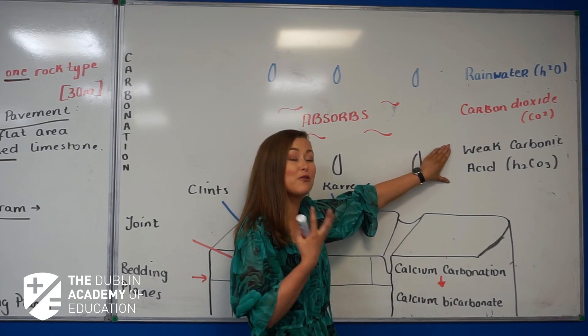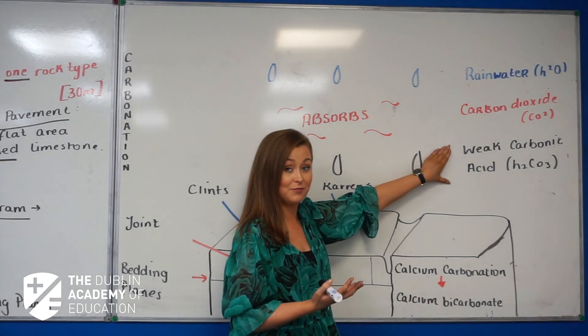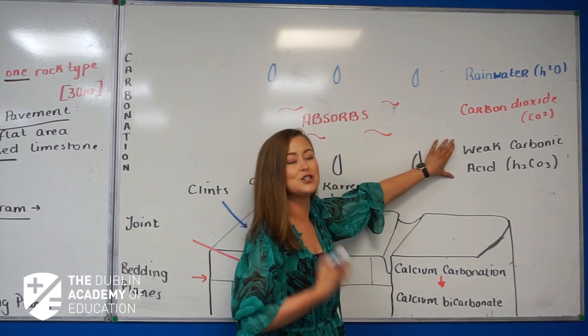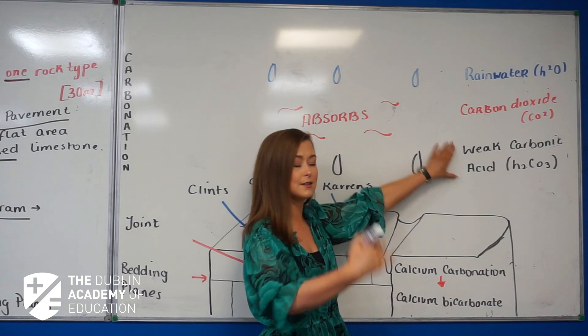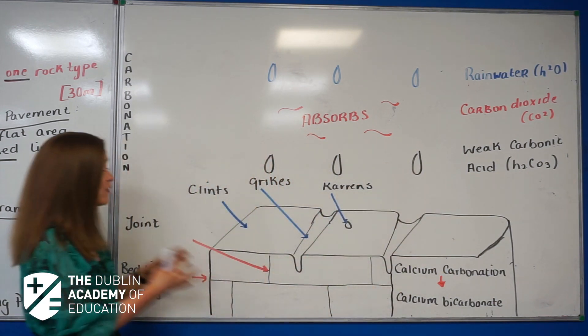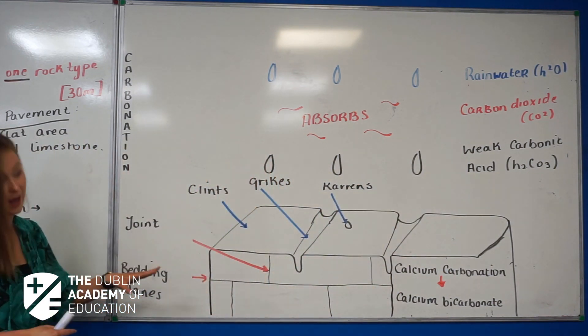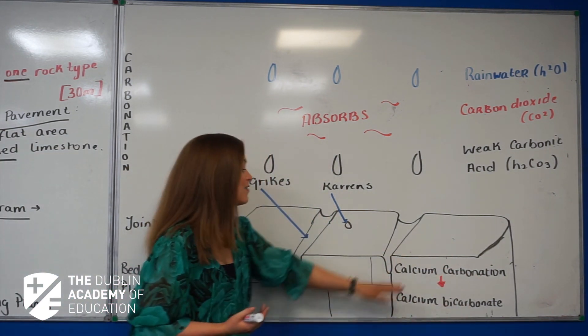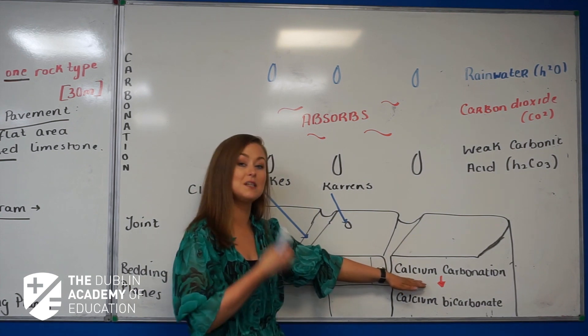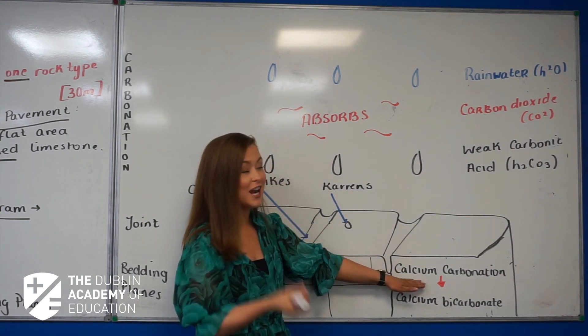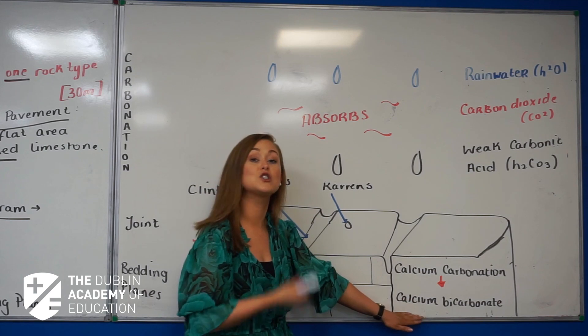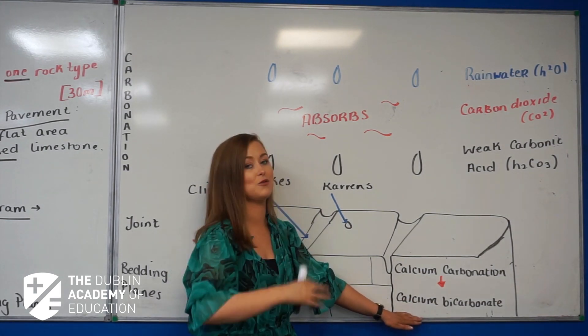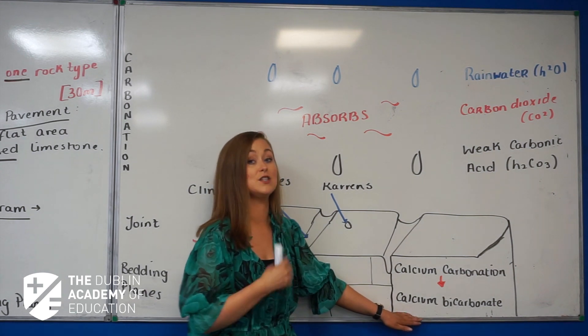Now H2CO3—we refer to that commonly as acid rain, but it's better to actually describe it as a weak carbonic acid. Now what we know is, when that falls on our limestone pavements, limestone is primarily composed of calcium carbonate in the form of mineral calcite. That insoluble calcium carbonate changes to calcium bicarbonate, which is soluble in water, and it's actually washed down through the limestone in the process of solution.